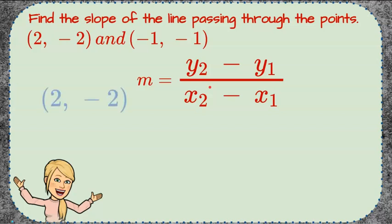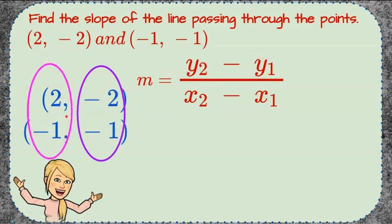Welcome back. So we're going to begin by identifying our first ordered pair as 2, negative 2. Our second is negative 1, negative 1. And we're going to identify that we're going to first subtract our y-coordinates and then divide by our change in our x-coordinates.